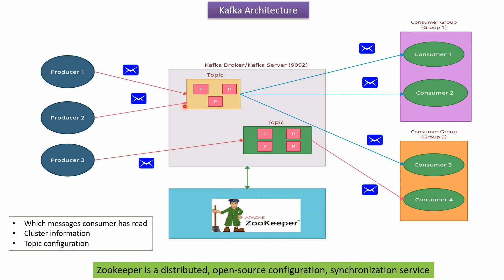Suppose a new partition is added to a particular topic — that information will be sent to Zookeeper, and Zookeeper will inform the consumers. Similarly, if a new consumer is added to a consumer group, that information will be sent to Zookeeper and it will maintain those details.